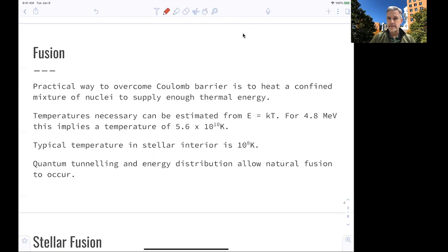You can estimate how much energy is needed. If you, for example, assume a Coulomb barrier of about 5 MeV, this implies temperatures of 5 times 10 to the 10 Kelvin. So that's really, really hot. If you compare this to typical temperatures within stars, you will find that those are only 10 to the 8 Kelvin.